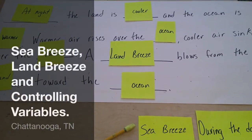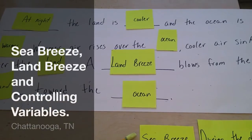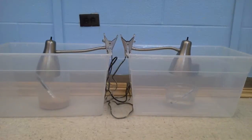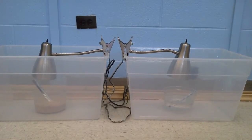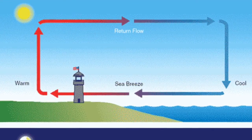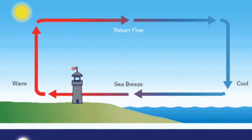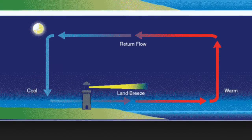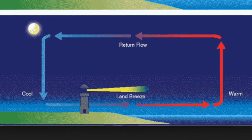This is a lesson that I do with my students to show them the causes of sea breezes and land breezes. Sea and land breezes are caused by an uneven heating of land and water by the sun. But instead of just telling them that, I would prefer to prove to them the difference between the heating of land and the heating of water.